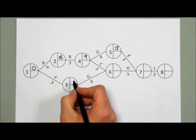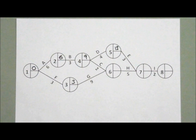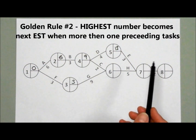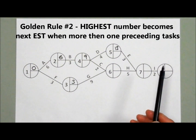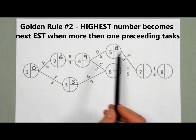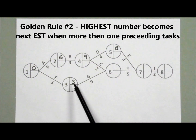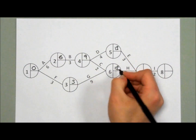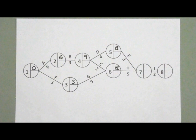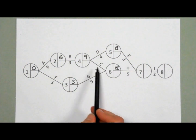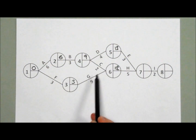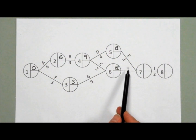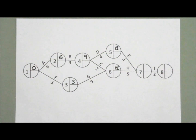0 plus 3 means that G can start after 3 weeks. H has to start when C and G have finished, so we need to wait for the last one of those to be completed - we're looking for the highest number. 9 plus 2 is 11, and 3 plus 9 is 12, so this is actually going to be 12. This is our second rule: always go for the highest number. The reason is, if we start after 11 - that's 9 plus 2 - G wouldn't have actually finished; it would have one more week to run. If that was building a house and putting the walls up, we can't really put the roof on. So we go for the highest number.